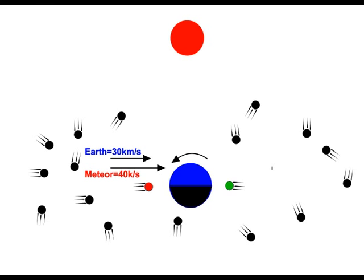With the heliocentric model, the earth is traveling around the sun at 30 kilometers per second, so meteoroids traveling in the same direction as the earth are only hitting the earth at 10 kilometers per second.